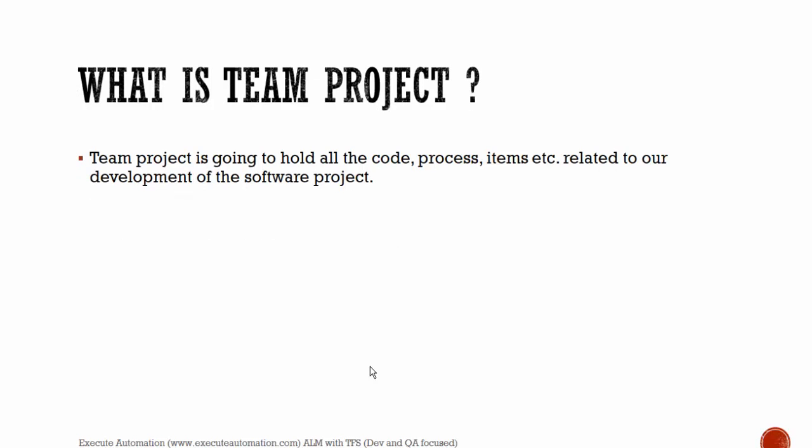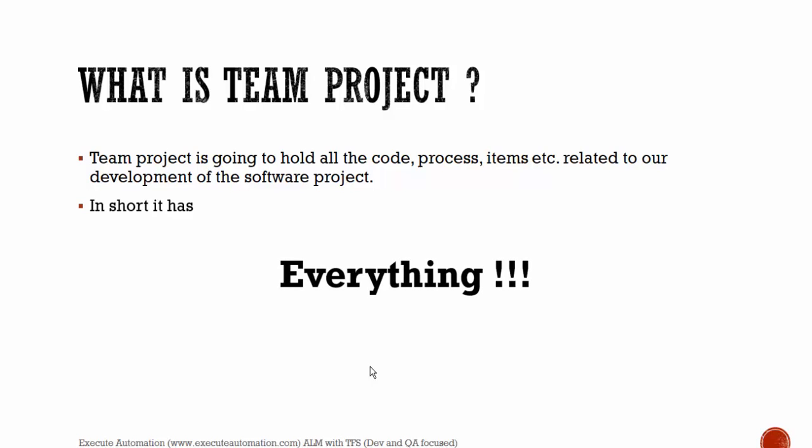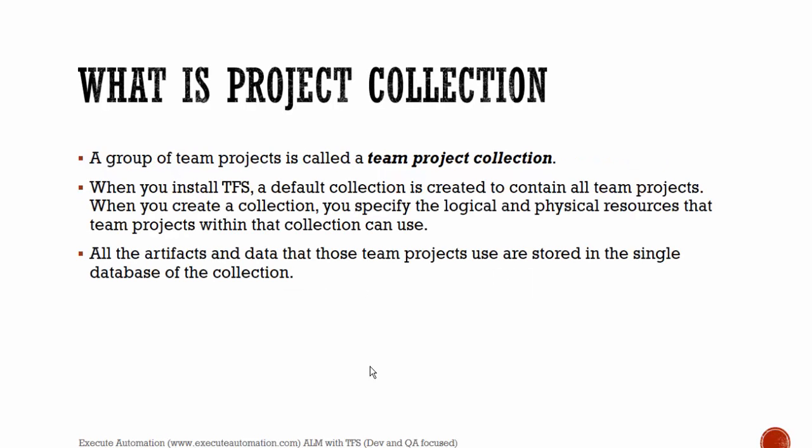What is a team project first of all? The team project is going to hold all the code, the process, and items related to our development of the software project. In short, it has everything — it includes everything related to your project. What is project collection? A group of team projects is called a team project collection.